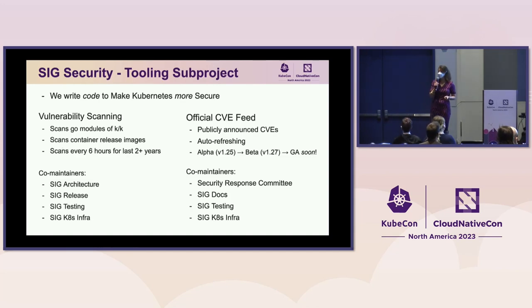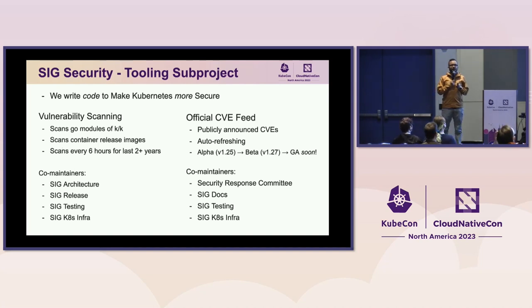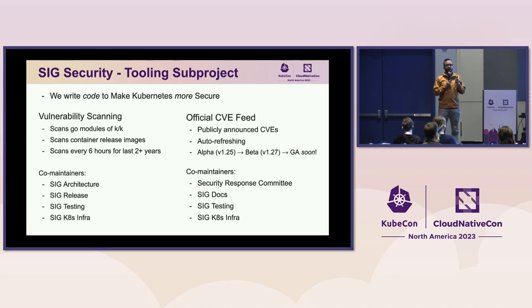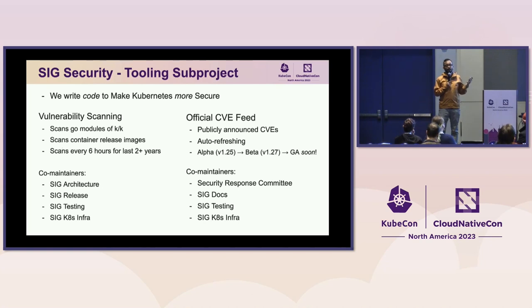Now I'm going to hand it to Pushkar to talk about tooling. We are a subproject called tooling where we make Kubernetes more secure by writing code. There are two tracks we currently work on. One is scanning for vulnerabilities in Kubernetes: we have been scanning Kubernetes for Go module vulnerabilities and all the release images for almost two-plus years. The scan jobs run every six hours, and we continue to triage anything that seems important to fix with the rest of the community.